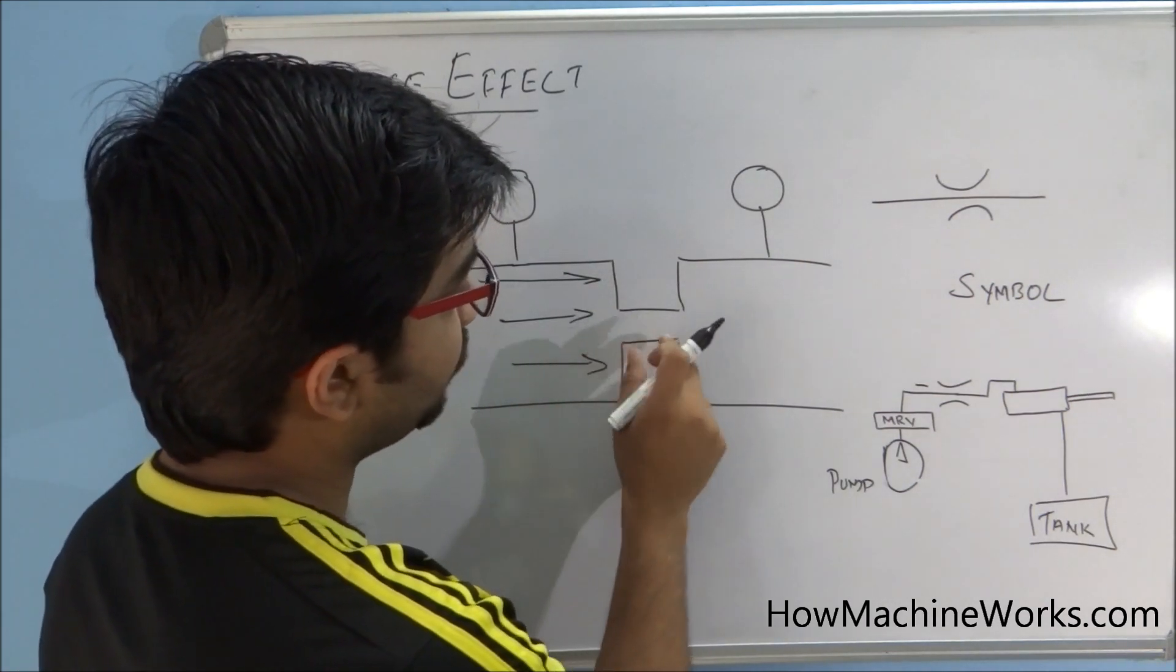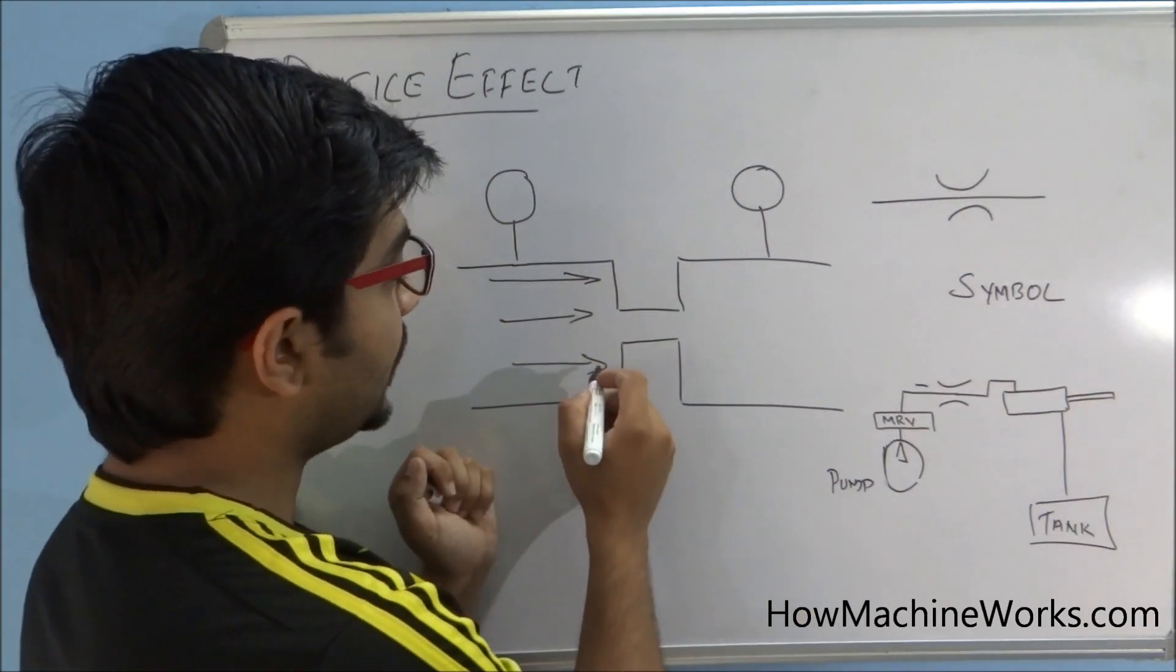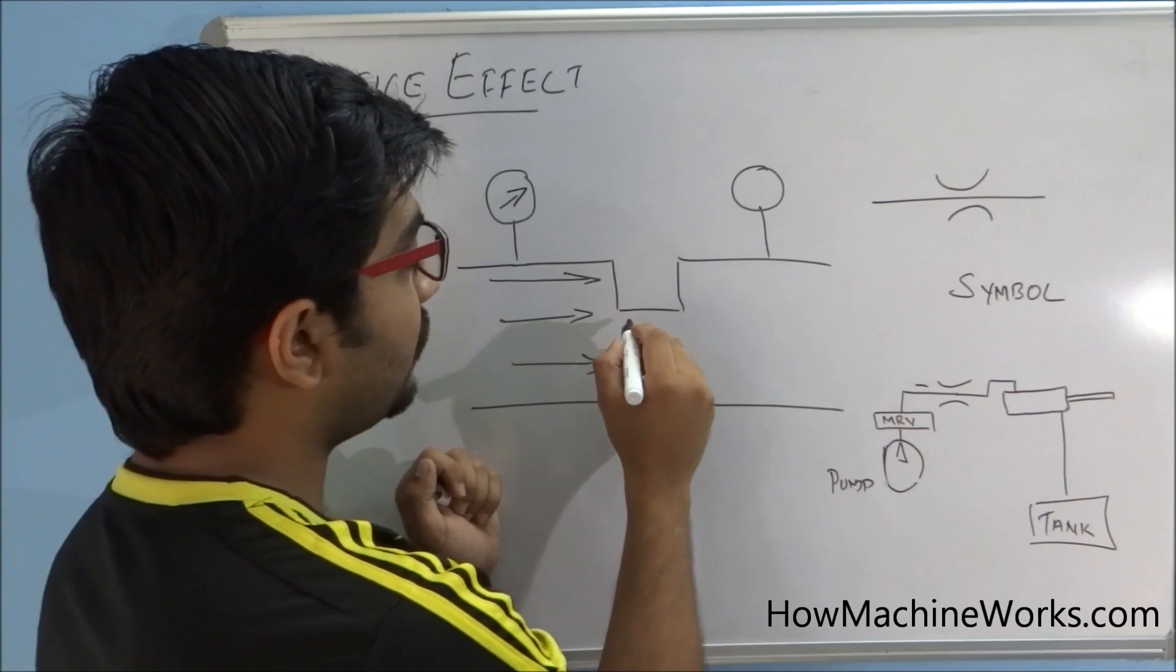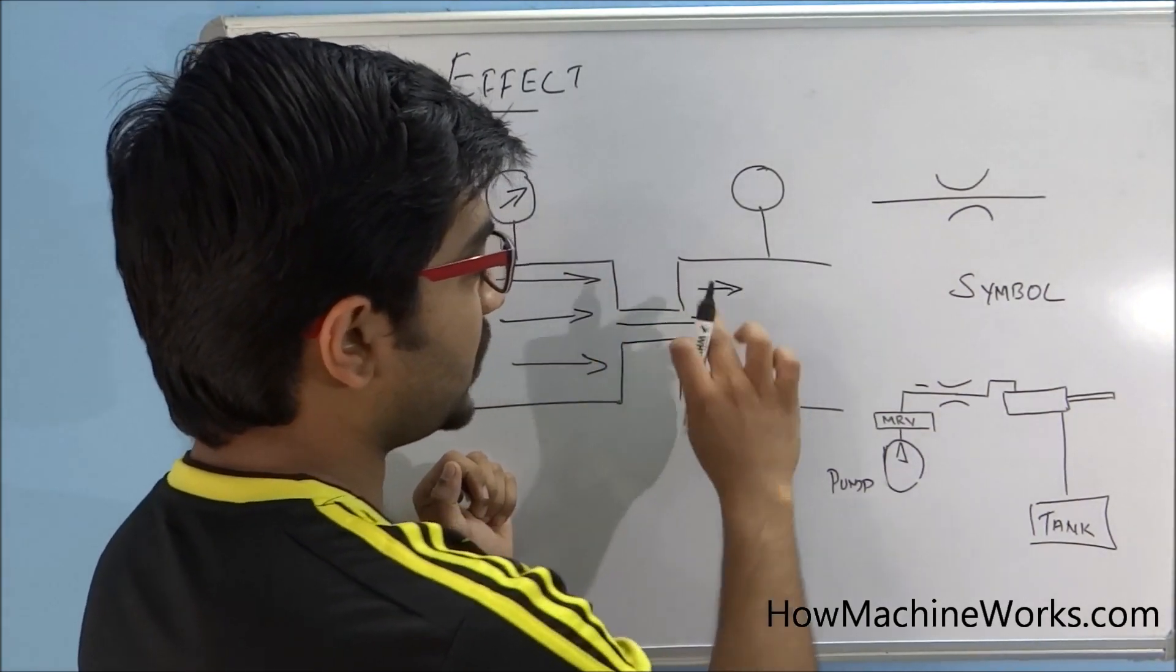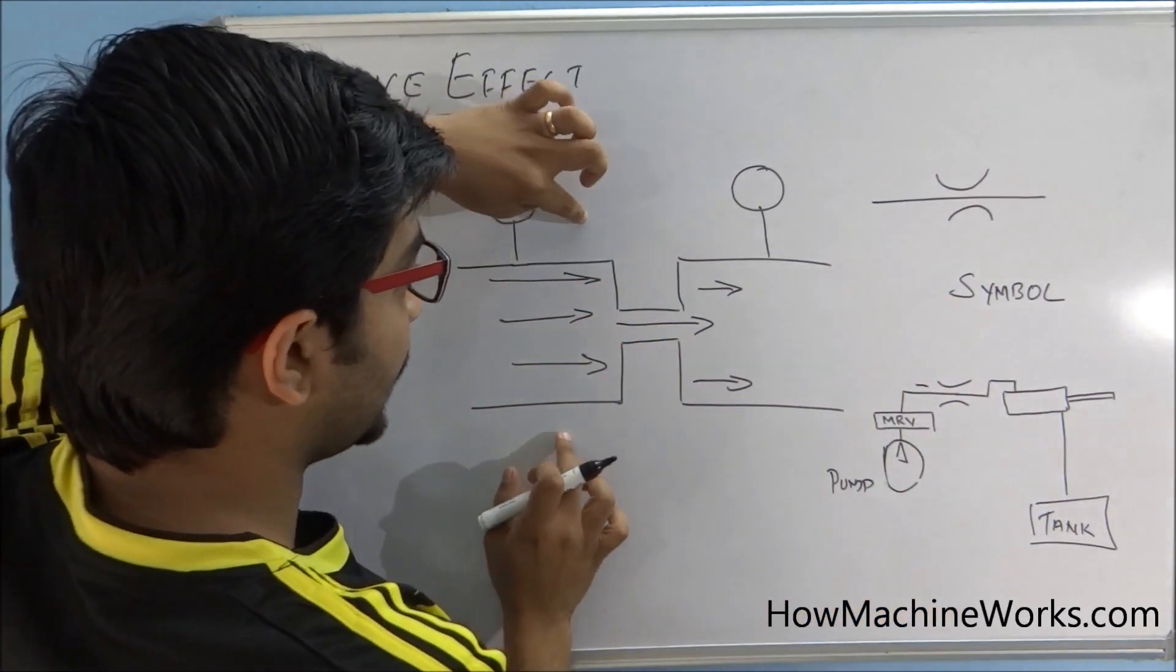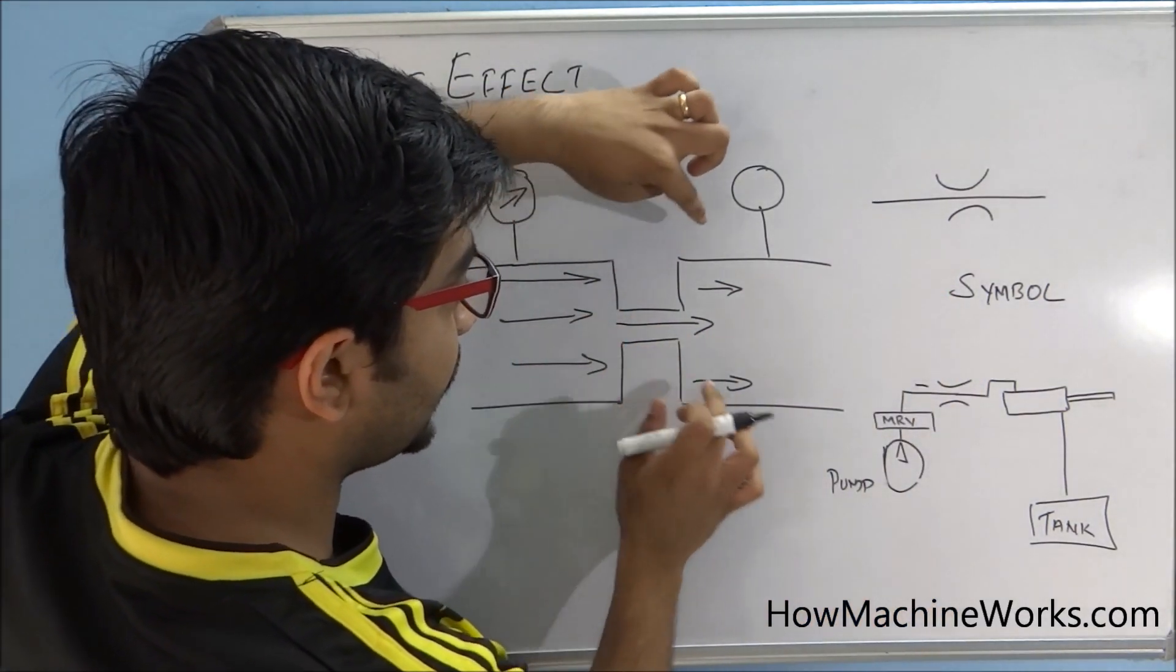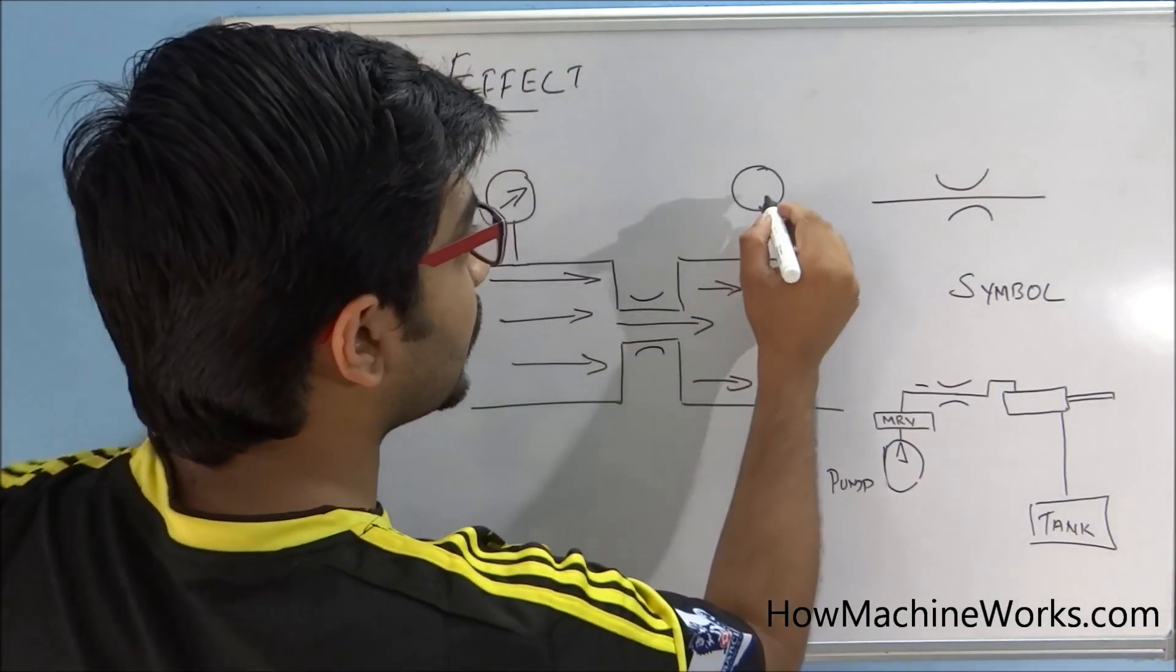So the pressure over here increases. When the flow comes out here, it will be in a less restricted area - the area again increases. So more area here, lesser area here, then again it increases. This is the orifice over here.